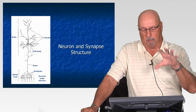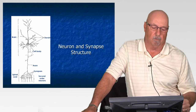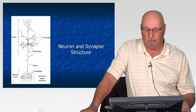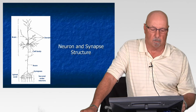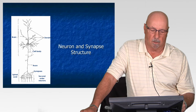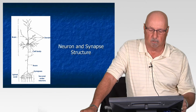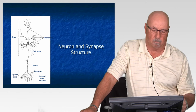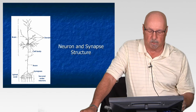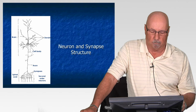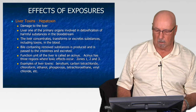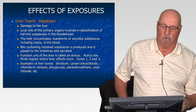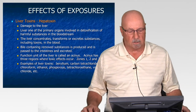Looking at a schematic of the body's nervous system, you have the brain and various nerve endings, neurons, and synaptic structures that come out from the brain and go down into the spinal cord system — and these are the things that can be impacted by neurotoxins.